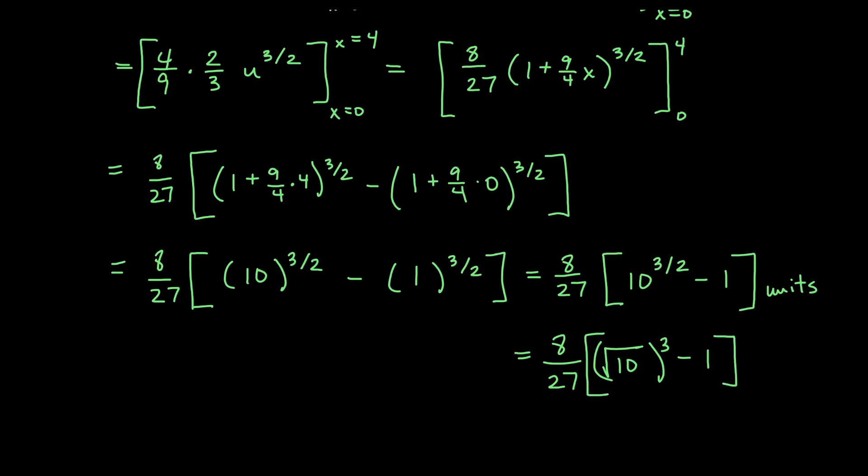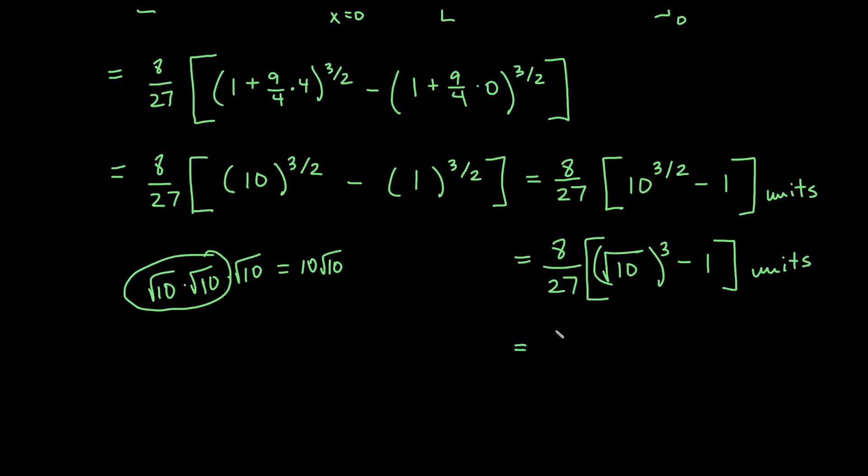And then they may simplify it further, and they may go ahead and see three copies of a square root. So if you think about root 10 times root 10 times root 10, two of those copies makes a 10. So this would really be 10 root 10. And so what you may see as a final answer from a lot of people on this one would be something like 8 over 27 in the front, and then they would say 10 root 10 minus 1. And its length, which is one dimensional quantity, so we would say units there.